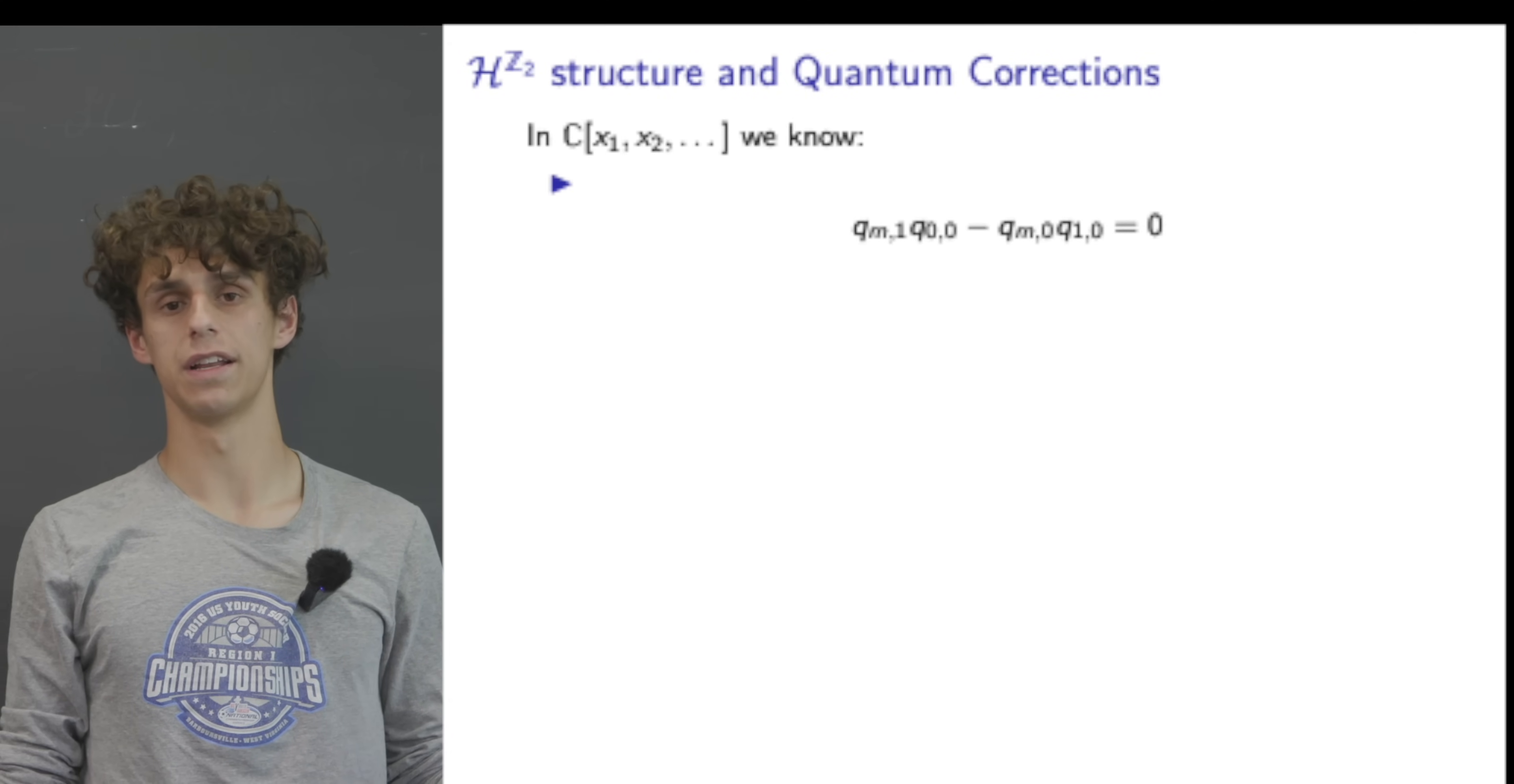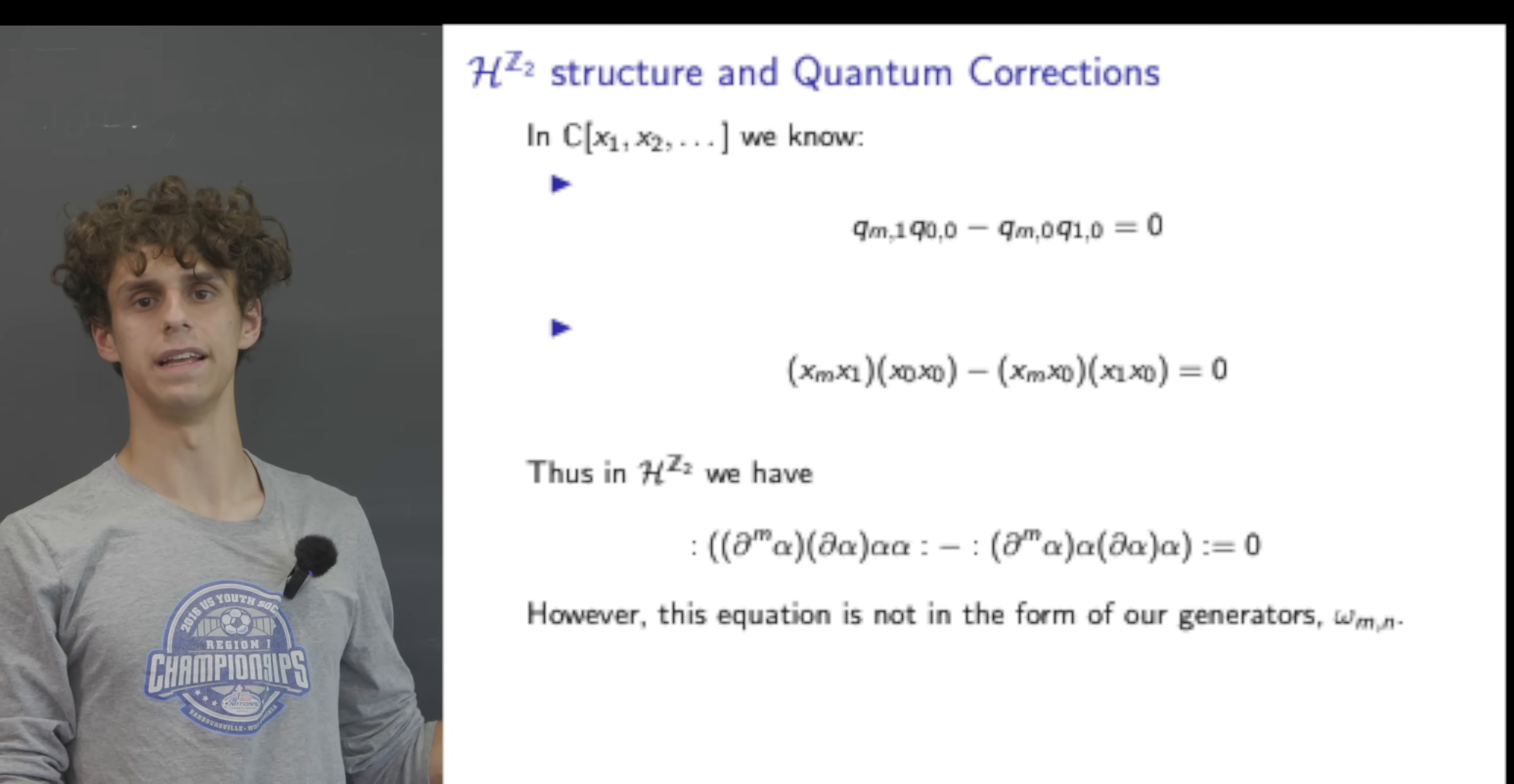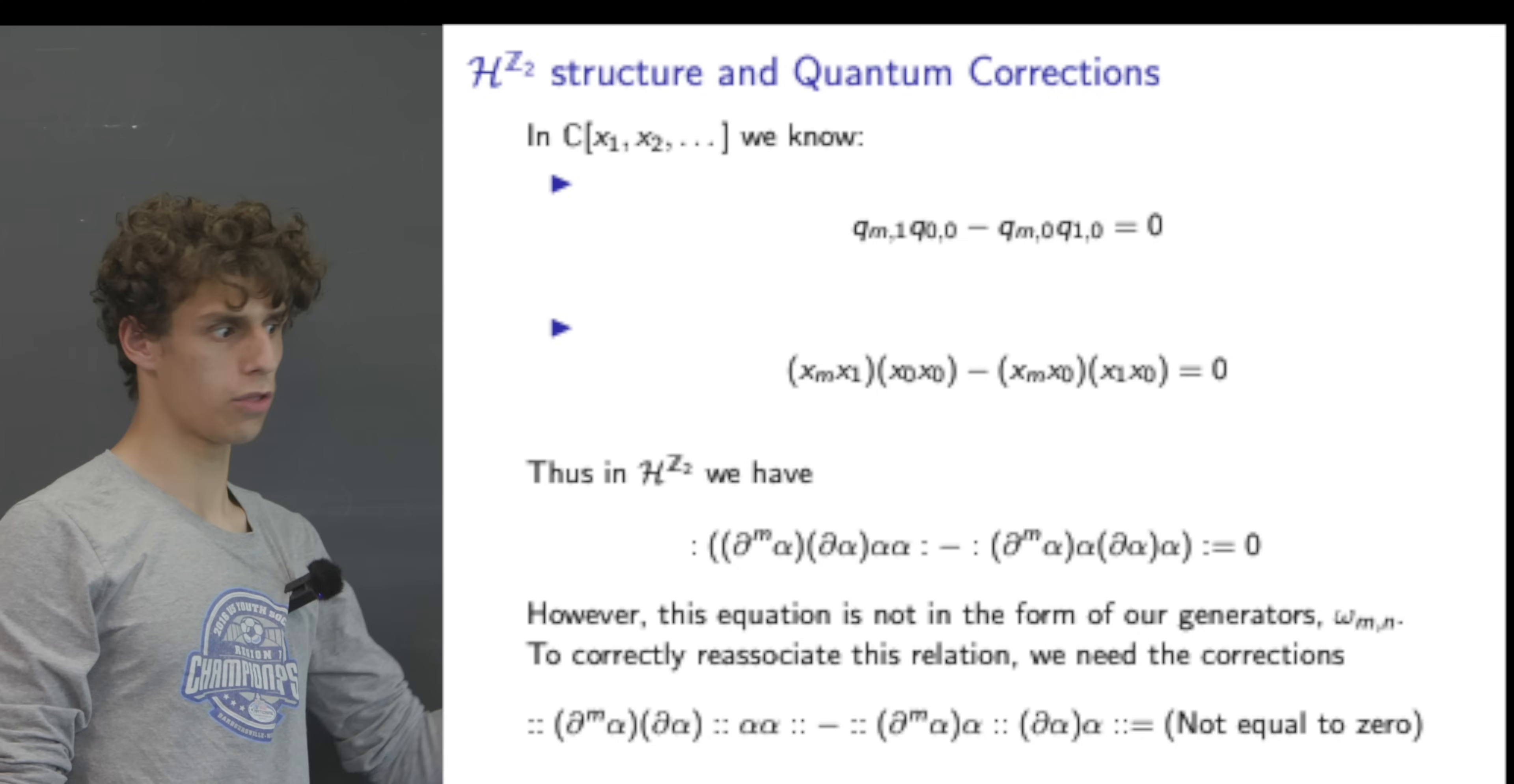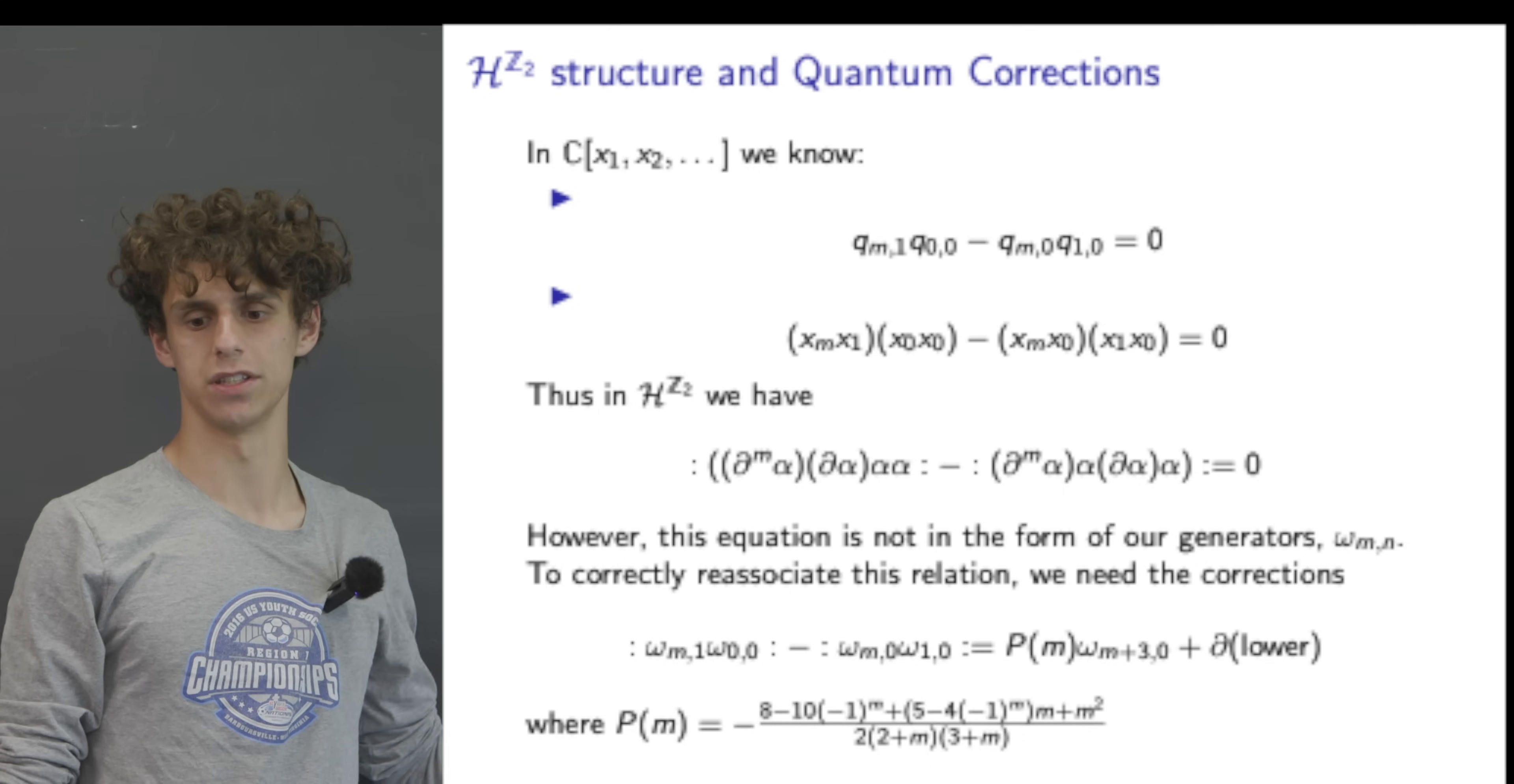Now in this polynomial ring we know that Q_{M,1} Q_{0,0} minus Q_{M,0} Q_{1,0} equals 0, and very closely related to that is this equation because we defined these q variables in terms of x, and thus in the Heisenberg algebra acted upon by Z2 we have this because the Heisenberg algebra is isomorphic to this polynomial ring. However this equation is not in the form of our generators omega_{M,N}, so we have to correctly reassociate this relation and we need the corrections.